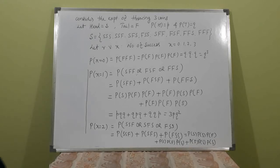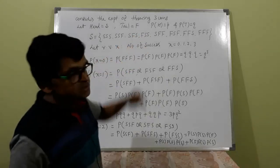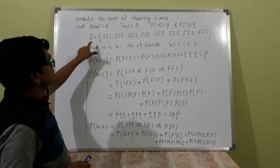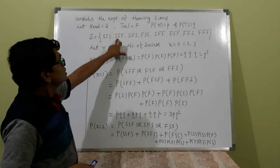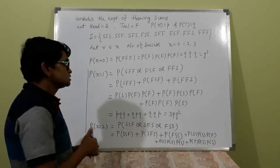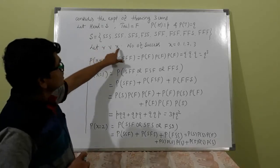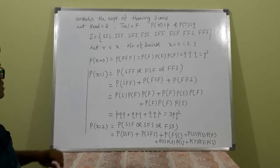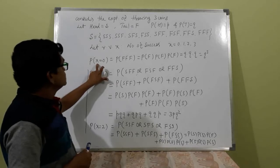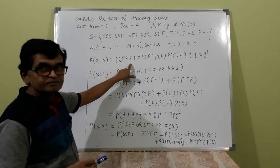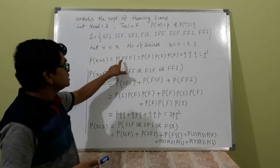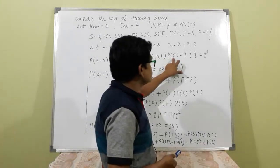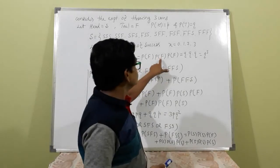Now consider one example: the experiment of throwing three coins. Let head denote success and tail denote failure. Probability of head is p and probability of tail is q. The outcomes in terms of success and failure are: SSS, SSF, SFS, SFF, FSS, FSF, FFS, FFF. If random variable X is defined as number of successes, X may be 0, 1, 2, or 3. Probability of X = 0 is probability of FFF, which is q × q × q = q³, since the trials are independent.